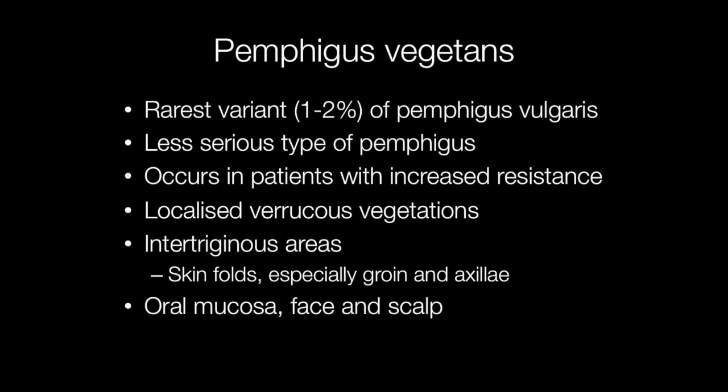The rarest subtype of pemphigus vulgaris is pemphigus vegetans, accounting for around one to two percent of cases of pemphigus vulgaris. It is less serious than pemphigus vulgaris and it occurs in patients with increased resistance to the disease.